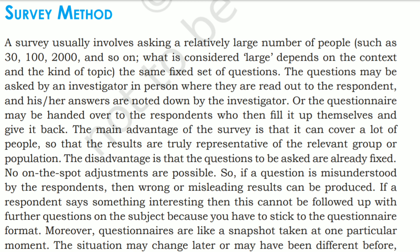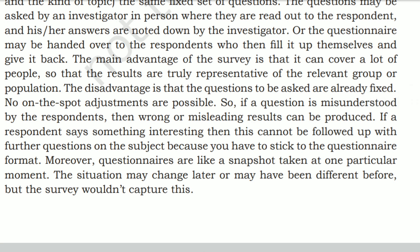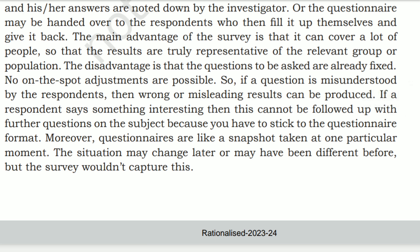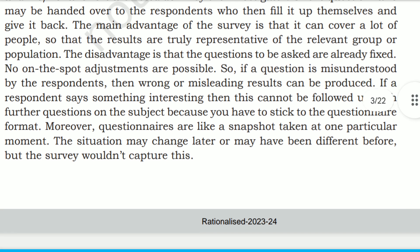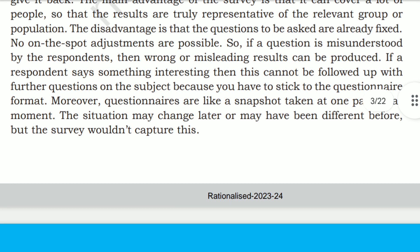A survey method involves asking a relatively large number of people — such as 30, 100, or 2000 — the same fixed set of questions. What counts as a large number depends on the context. The questions may be asked by an invigilator in person, with answers noted down, or the questionnaire may be handed to respondents who fill it in themselves. A main advantage of surveys is that they can cover a lot of people, so results are more truly representative. However, questionnaire items are like a snapshot taken at a particular moment, and responses can be misunderstood.